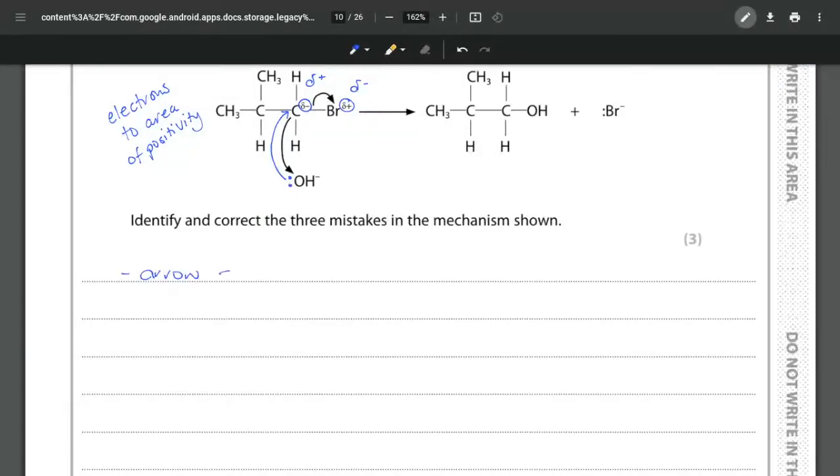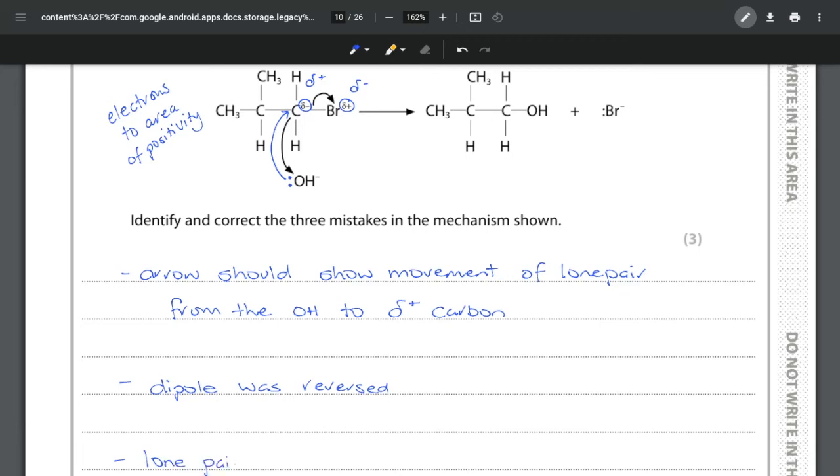First of all, the arrow should show the movement of the lone pair from the OH to the delta positive carbon. There's our first thing. Secondly, our dipole was reversed so we know that our carbon should be delta positive and our bromine should be delta negative. You may be able to get marks for showing that on the diagram as well. And the last point is that our lone pair on the OH minus, our hydroxide, was missing.